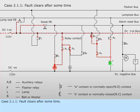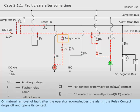Case 2.1.1. Fault clears after some time. On natural removal of fault after the operator acknowledges the alarm, the relay contact drops off and opens its contact.